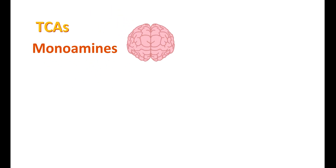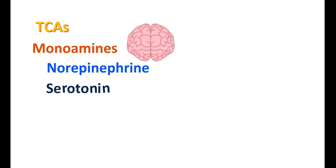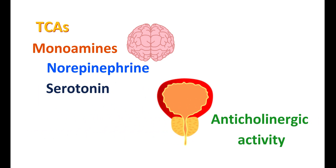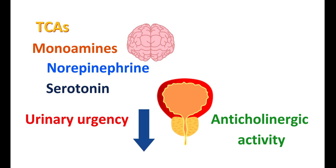TCAs work by increasing the levels of monoamines like norepinephrine and serotonin in the brain. However, these two antidepressants also have high anticholinergic activity on the bladder, thereby inducing bladder relaxation. This improves the symptoms of an overactive bladder, reducing urinary urgency and incontinence.